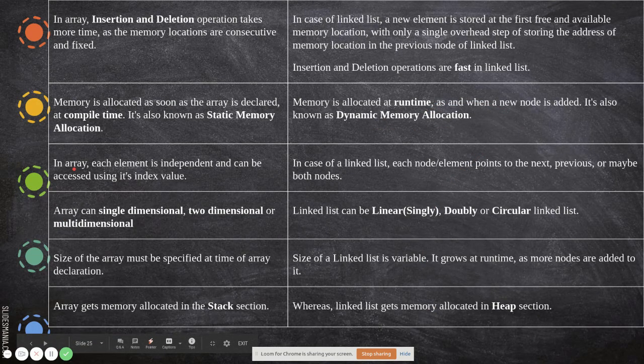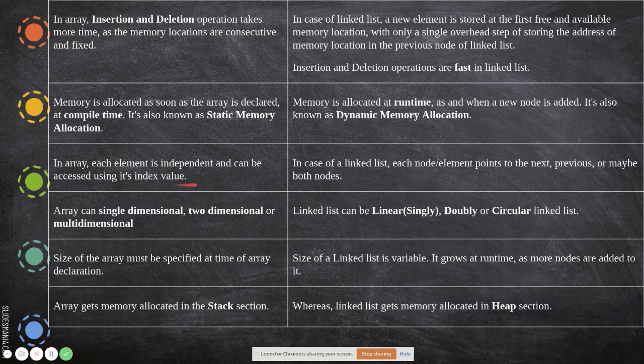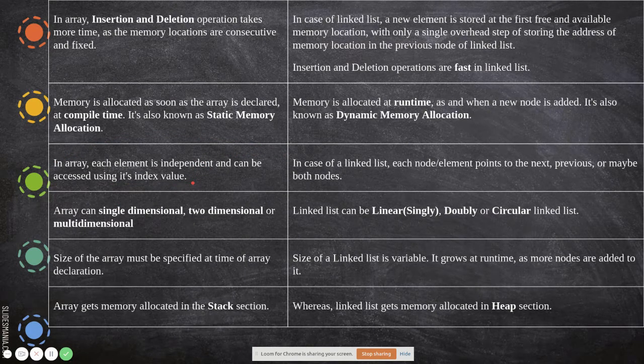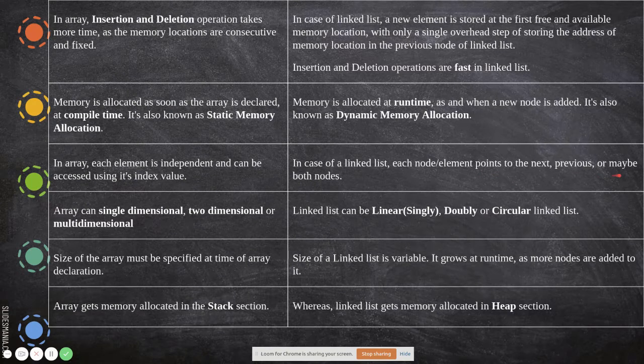In array, each element is independent and can be accessed using its index value. That's what random access. Whereas here it is not. In case of a linked list, each node or element points to the next, previous, or maybe both nodes, like in the case of the doubly linked list.